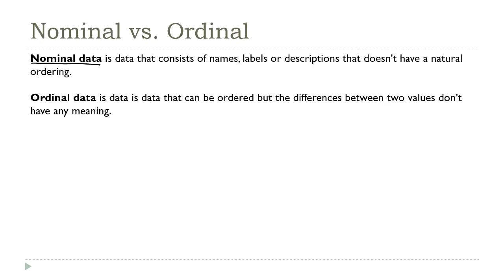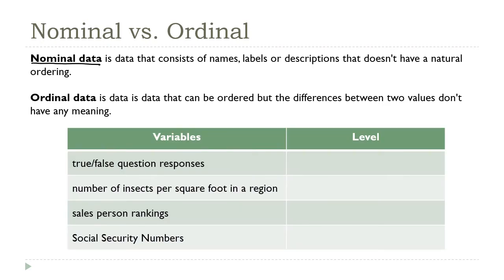With those definitions in mind, let's take a look at these variables and see where each one lands. True false responses can be ordered, any data can be ordered just using the standard dictionary ordering. However, if you respond false and I respond true, sorting your answer before mine doesn't give you any information you can use to compare them, which puts this variable in the nominal category.